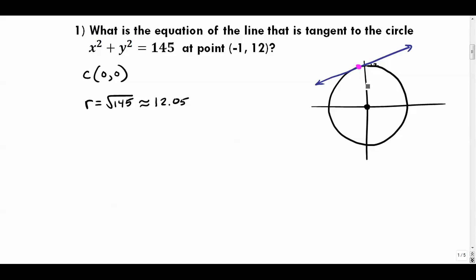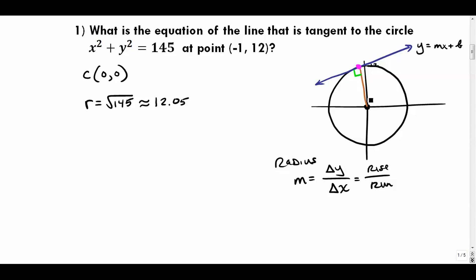To find the tangent line equation I'll need a slope and a y-intercept. First, let's find the slope of the radius drawn to (-1, 12). The slope is rise over run: it goes up 12 units and left 1 unit, so the slope is 12 over -1, which equals -12.